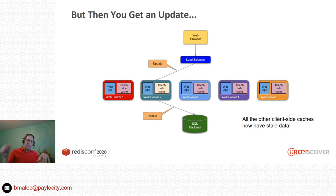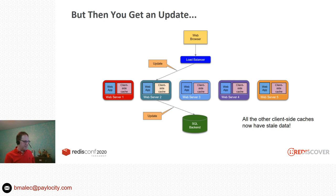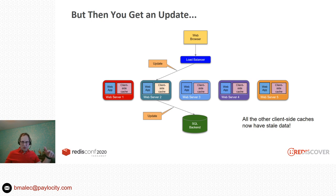Let's say we're displaying the user's name on the web page and the user decides to change their name. They make a request, it goes through the load balancer, gets assigned to one of the web servers. That web server will update the SQL back-end with the new name and also update their client-side cache. The problem is that web server has the correct value in its client-side cache, but all the other web servers have stale values.